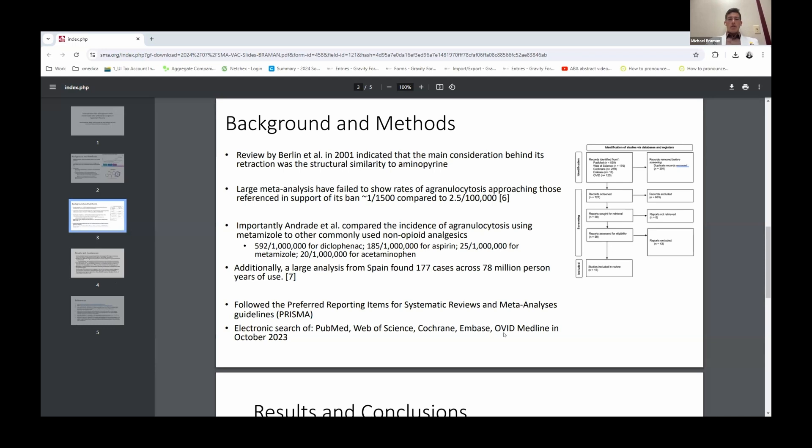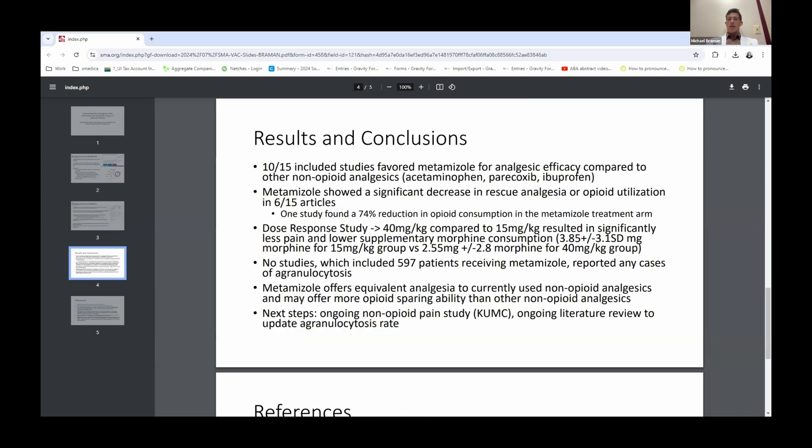We conducted a systematic review using the PRISMA guidelines for systematic review. We found 15 studies in the literature that we included that focused on metamazole as an analgesic in the setting of orthopedic surgery. 10 of the 15 included studies favored metamazole for analgesic efficacy compared to other non-opioids, those included acetaminophen, paracoxib, and ibuprofen.